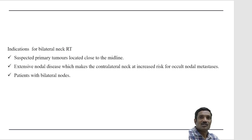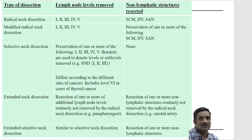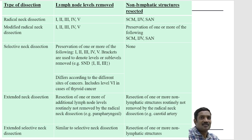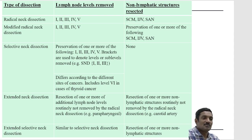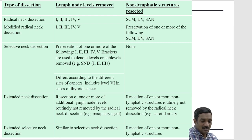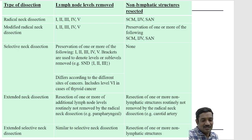Regarding neck dissection types: radical neck dissection and modified radical neck dissection are called comprehensive neck dissections, removing levels 1–5. In modified radical neck dissection, one or more of the following are preserved: sternomastoid muscle, internal jugular vein, or spinal accessory nerve. Selective neck dissection removes specific levels — 1, 2, 3, or 4 levels as indicated — and the levels removed must be documented. Extended neck dissection involves removal of non-lymphatic structures in addition.